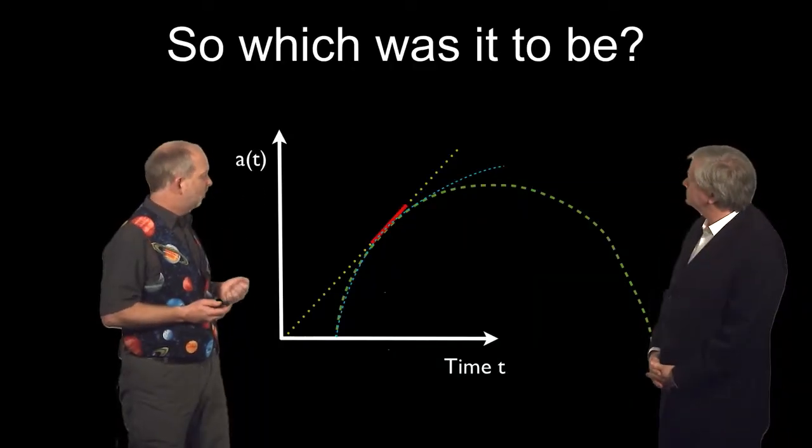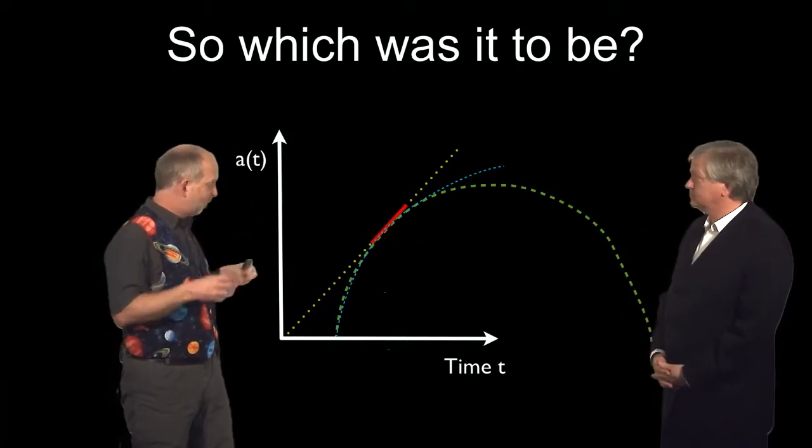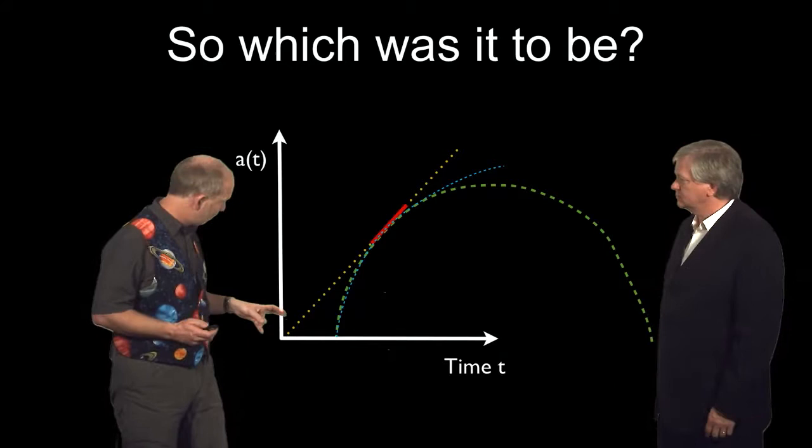So this was the big debate in the mid-1990s. Which was it going to be? We knew space was expanding. We knew there was gravity, which was going to slow things down. The big question was, how much is it going to slow things down?